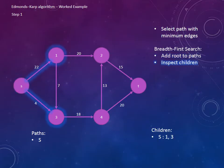Now that the root node has been added to our collection of paths, we have to inspect the children connected to it. In this example, the two children nodes are 1 and 3, so we note that and then update our collection of paths so that we now have S to 1 and S to 3.